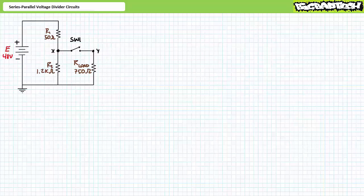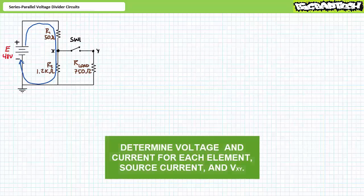Voltage dividers often take the form of a series parallel circuit with one or more switches as illustrated here. If switch one is open, the load resistor is effectively removed from consideration and R1 and R2 are placed in a pure series configuration. As an exercise, I invite you to solve for the voltage across and the current through each element in this system while the switch is in the open state. Additionally, see if you can use Kirchhoff's voltage law to determine the voltage at node X with respect to ground, the voltage at node Y with respect to ground, and the voltage across the switch, node X to node Y.